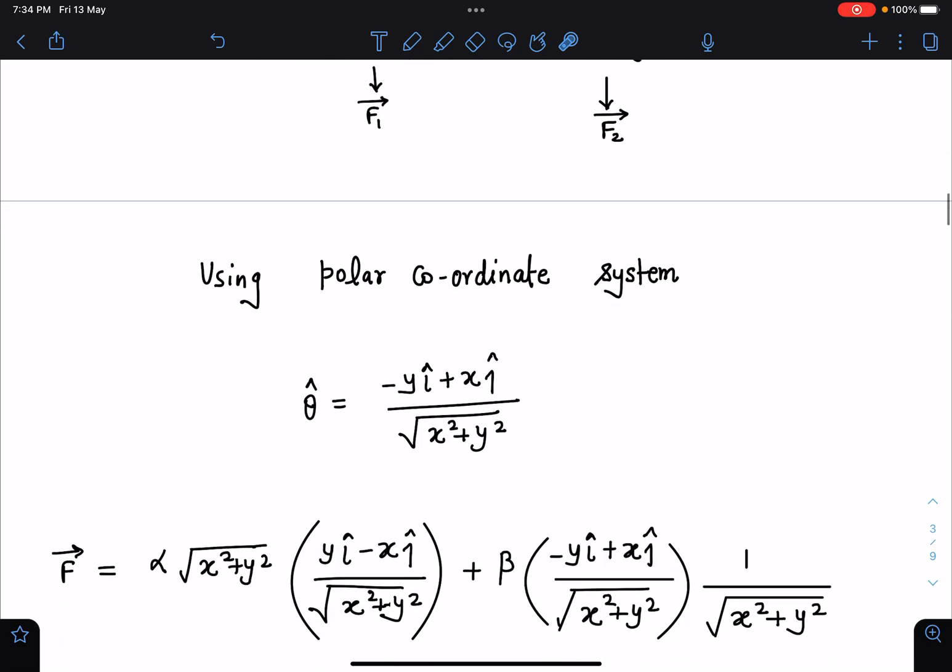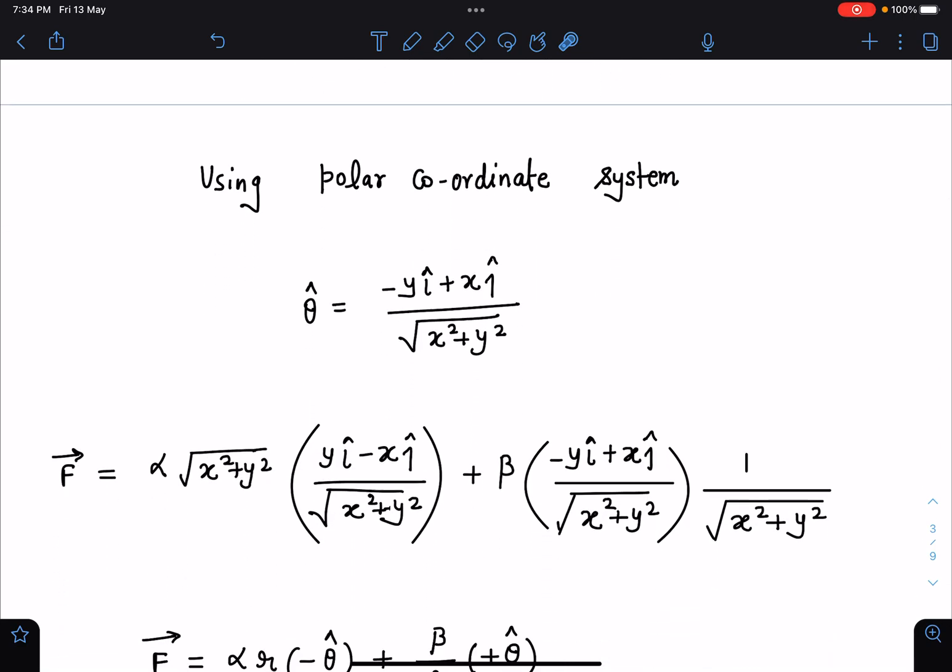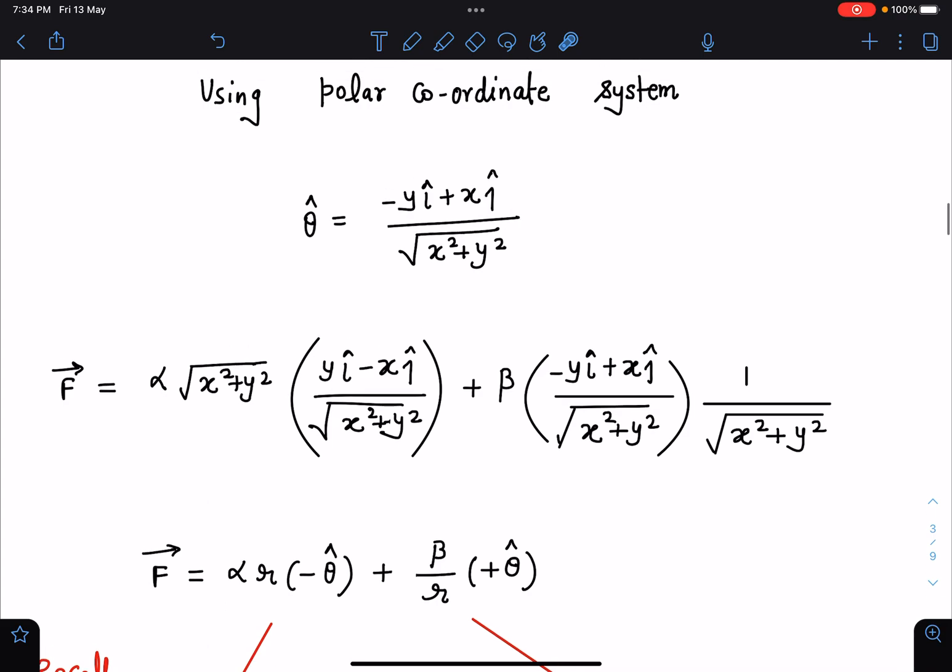Further you can see if I rearrange these terms I am getting this term as alpha r minus theta-hat and this is beta by r and this theta-hat. These forces, now you'll remember we encounter these two in time varying magnetic field. However I am not using that logic here, but this is like inside the magnetic field.